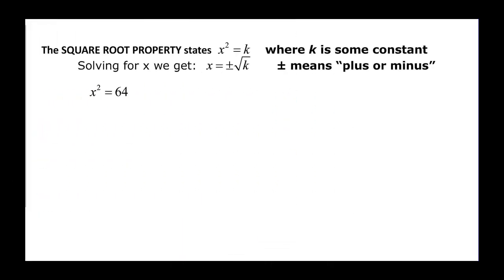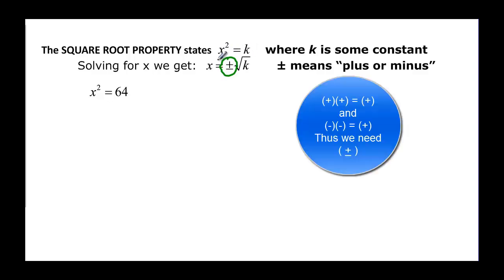So the square root property states that if we have x squared equal to k, where k is some constant, then when we solve we can take the square root of both sides. The square root of x squared gives us just plain x, which is what we're solving for. But we have to remember the plus or minus, because we don't know if a positive or a negative was squared to get that positive number.